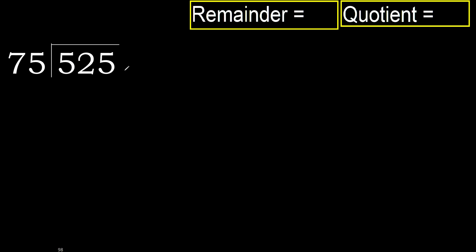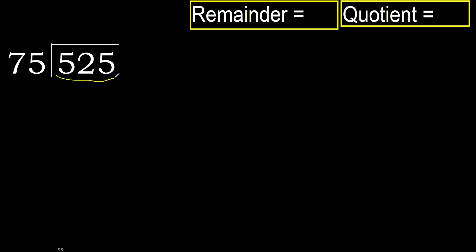525 divided by 75. 5 is less, therefore next. 52 is less, therefore next. 525 is not less, therefore we work with 525. 75 multiplied by which number is nearest to 525, but not greater?